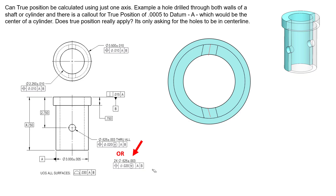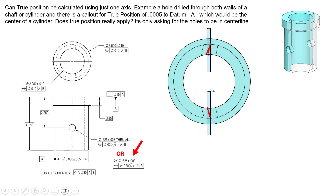Each axis must be within a tolerance zone of 0.020 relative to datums A and B. Since both refer to the same datum reference frame, the zones are essentially stacked on top of each other. Each axis can deviate independently within its own zone. This is a slightly less conservative control compared to Option 1 — the individual axes are shorter and don't need to fit within one large single envelope. The features are allowed to deviate separately rather than being assessed using one combined UAME.